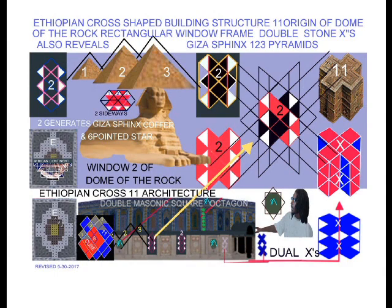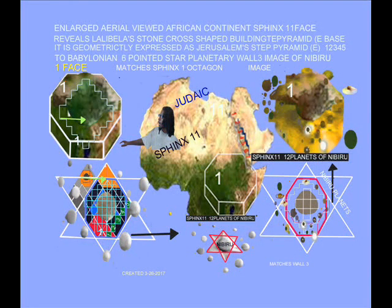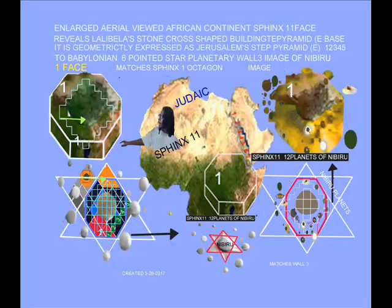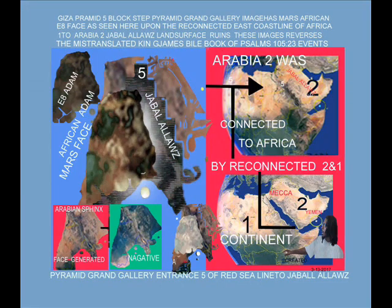On a blank sheet of paper, if you write two stone X's the thickness of your little finger, one above the other, and draw straight lines down from the top corners of the upper X so that they intersect with the bottom corners of the lower X, then draw a line straight down the middle — you have just generated a black African Ethiopian stone cross-shaped building structure in Lalibela. We have 100% geometrically proven that the architectural building structure in Lalibela is the origin of the Dome of the Rock octagonal building structure in Jerusalem.